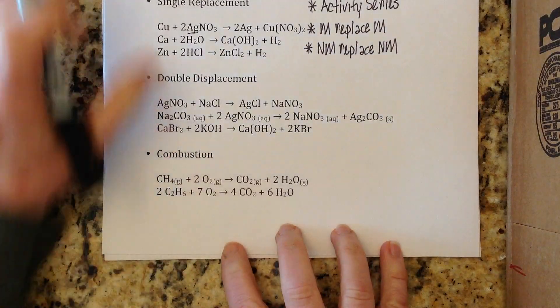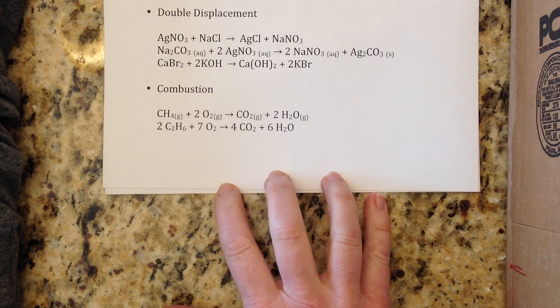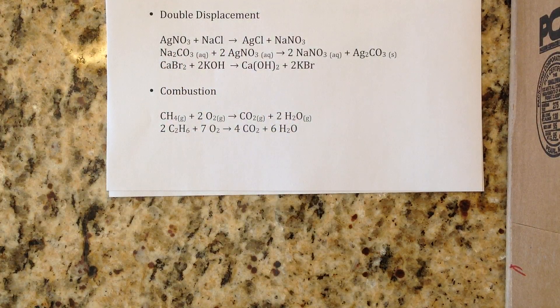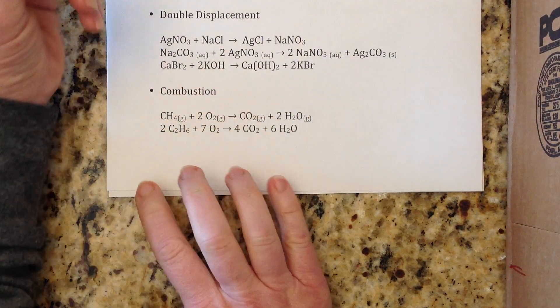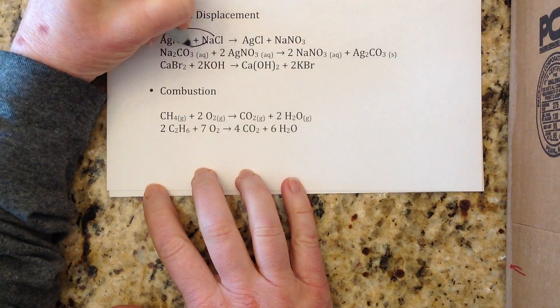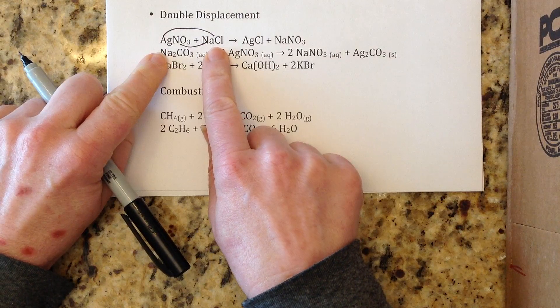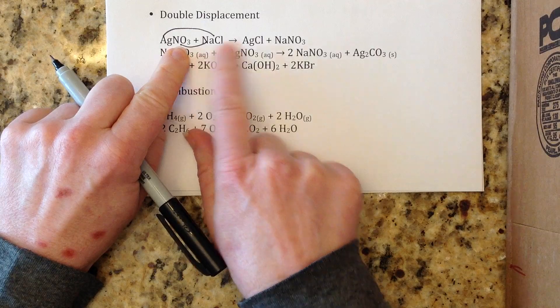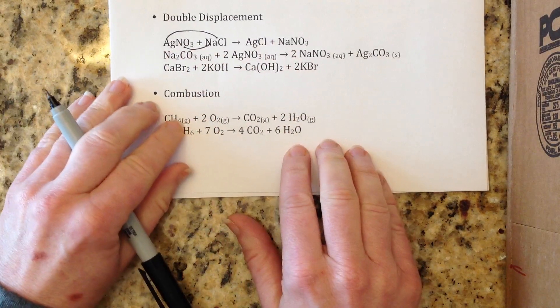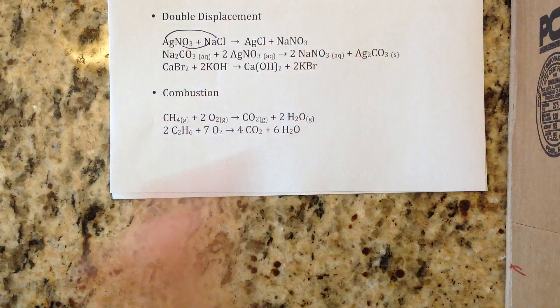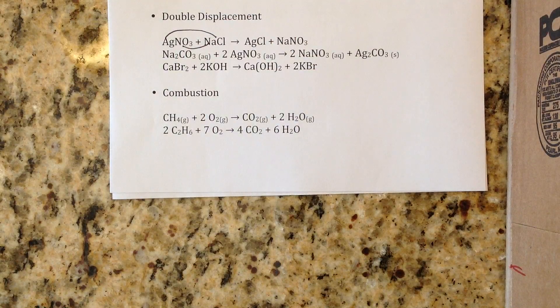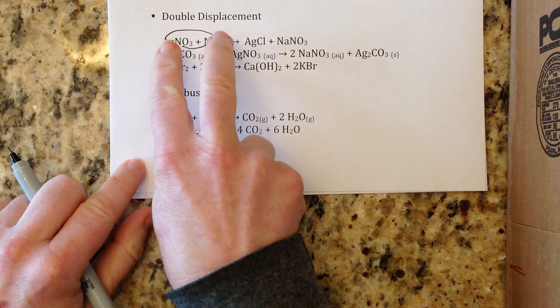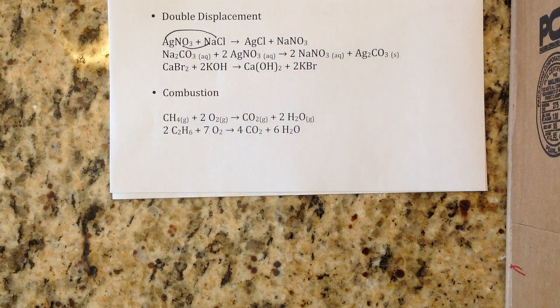Then we have the double displacement reaction. This is where you have two dates, like the double date, and they end up switching partners. We have a little thing we use - we just put the two outers together and the two inners together. You can see silver is going to end up paired up with chloride and sodium is going to end up pairing with nitrate. We say outie outie, inny inny, and then you always have the right ones together. This is very easy to recognize because you're going to have two ionic compounds on the left all the time.